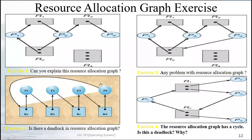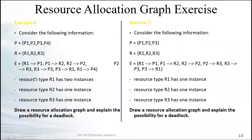One helpful hint is to draw processes sequentially — P1, then P2, then P3, then P4 — as is done in the textbook. For example, given a question where P = {P1, P2, P3, P4} and R = {R1, R2, R3}, you identify four processes and three resources, then interpret each allocation and request statement one by one to build the graph.